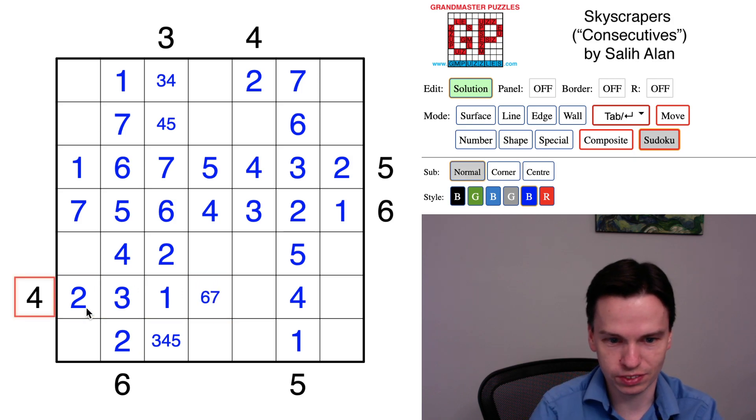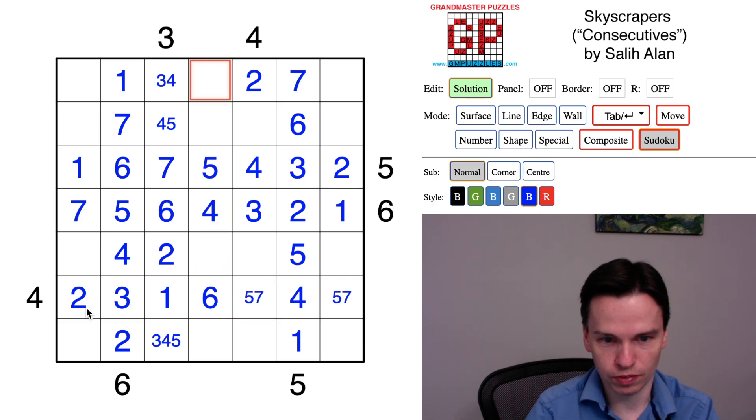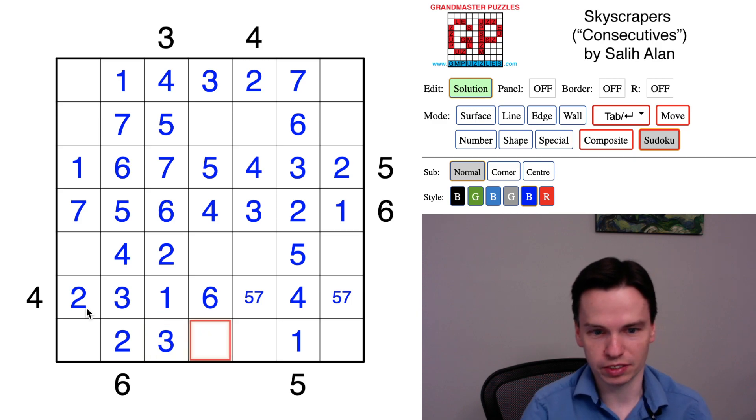But this four has to see a total of four buildings, so the six has to be closer. Leaving behind this pair, we've got four, five, six coming up with one, two, seven being seen. So this is a forced three, which means the four, five is coming in quickly, as is this one, two, three. This is a forced seven.